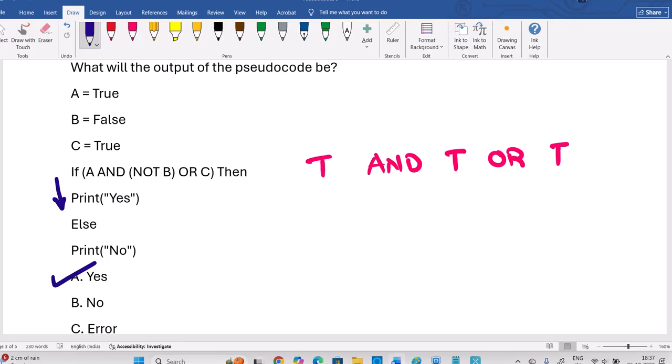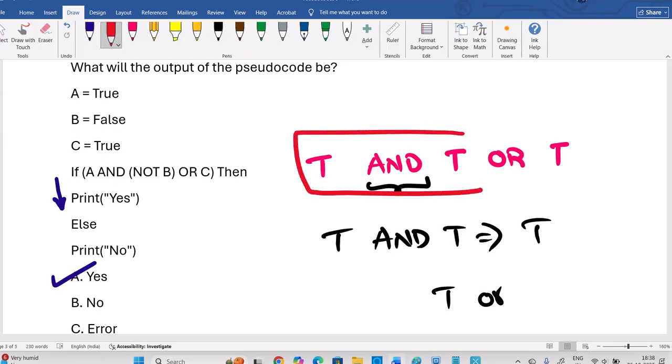Right? So this will be definitely true only. We have to enter into this loop. Answer will be yes. Right? AND and OR. Okay, as per priorities, if you see, AND is highest priority. So if you try true and true, it will give true only.